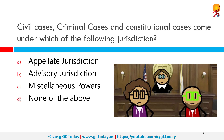Civil cases, criminal cases and constitutional cases come under which of the following jurisdiction? The correct answer is appellate jurisdiction. The Supreme Court is the highest court of appeal and the writs and decrees of the Supreme Court run throughout the country. Cases come to the Supreme Court in the form of appeals against the judgments of lower courts — this is called appellate jurisdiction, which involves constitutional, civil and criminal matters.